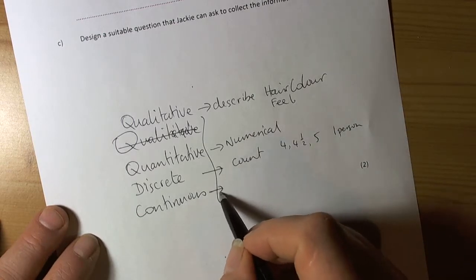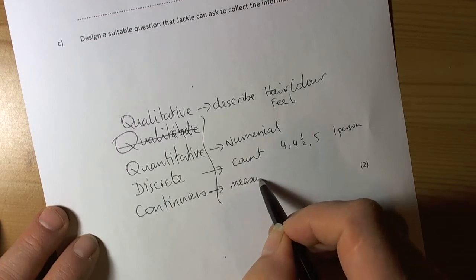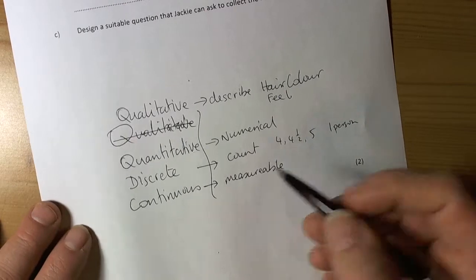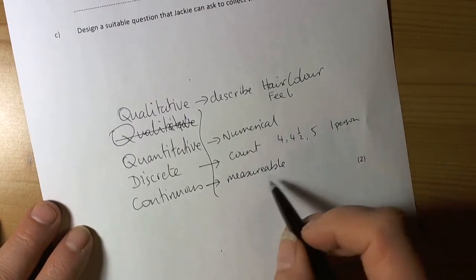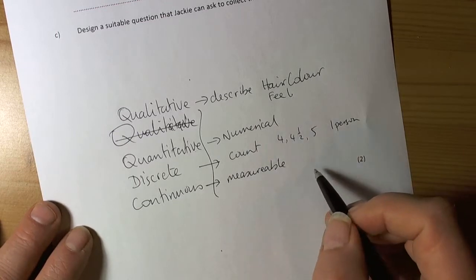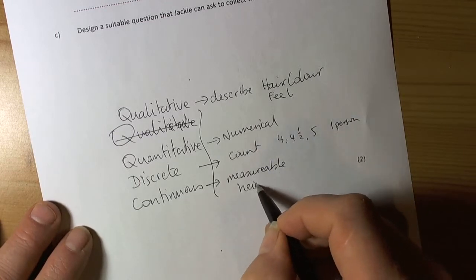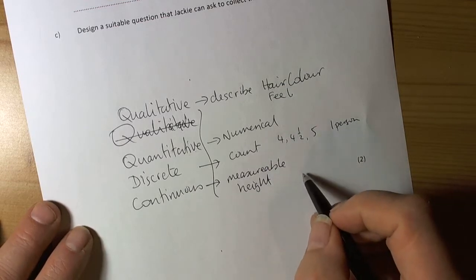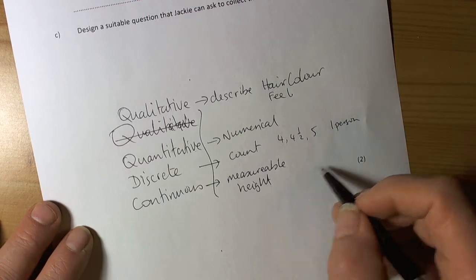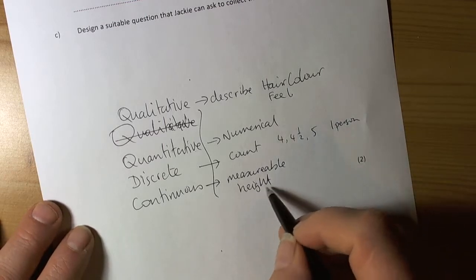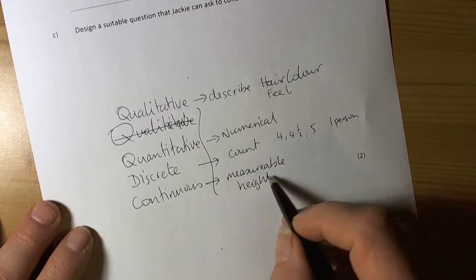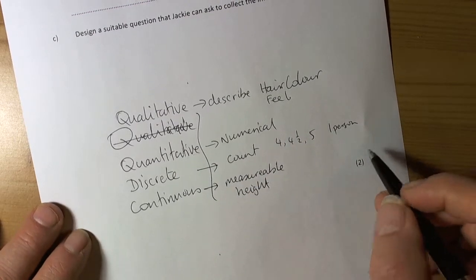Continuous data is measurable - data types where you would use a ruler, a weighing scale, something that you measure. Continuous means goes on forever, you can take any value. Height, for example, is a classic continuous variable. 1.2 metres could be 1.201, could be 1.2015, it could take any value. Things that you measure tend to be classed as continuous data types - time, and so forth.